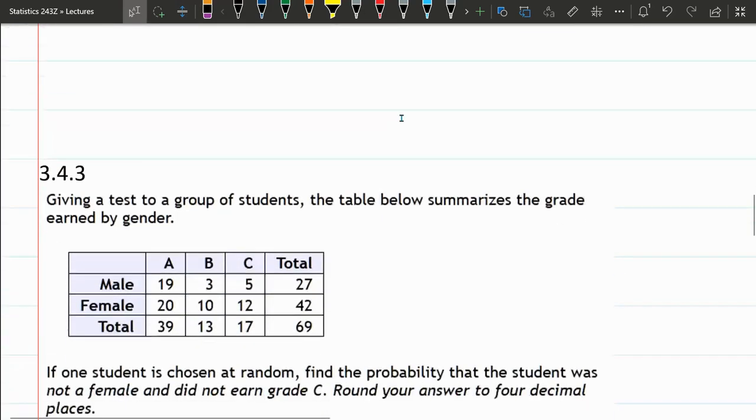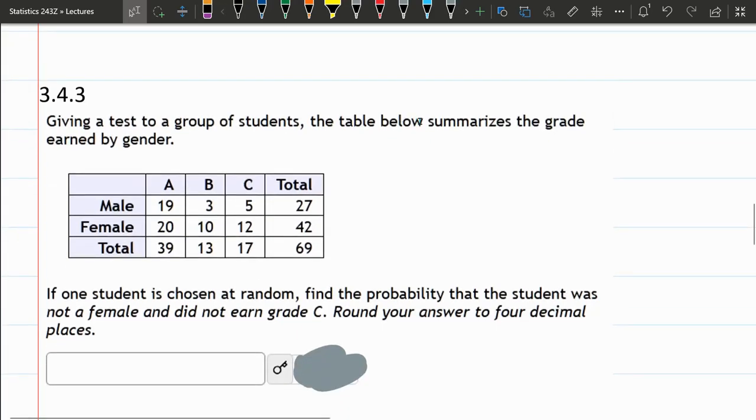Now the next question is going to be similar but a little different. If one student is chosen at random, find the probability that a student is not a female and did not earn a C. Unlike the one before, there was no given information. It doesn't say we're only considering C students or only considering females.